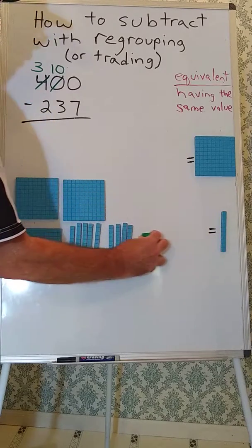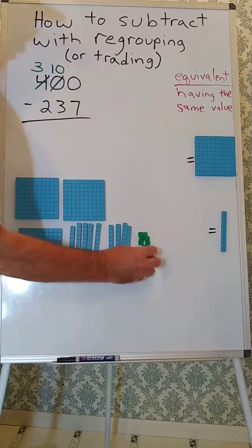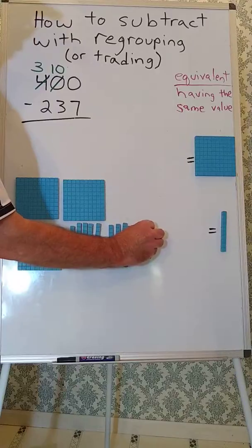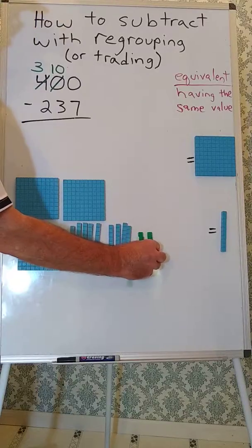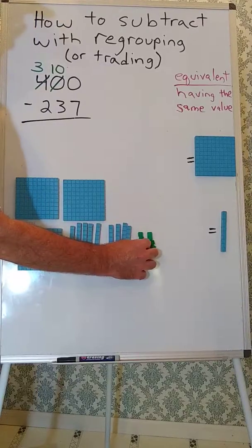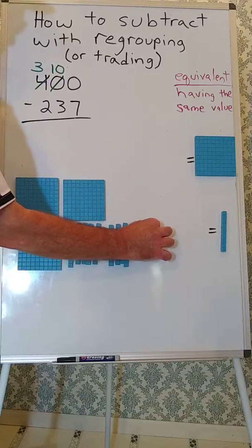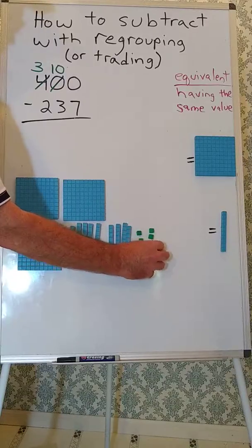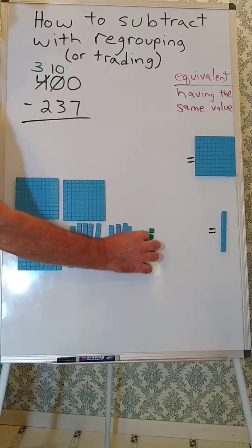So we're going to place 10 ones over here, and we're going to arrange them so that we can see that we have 10 ones. Okay, so we see two groups of 5.